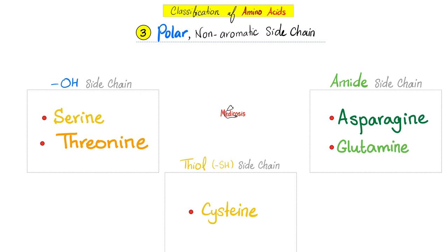Third group: amino acids that are polar with non-aromatic side chains. Serine, threonine — they have an OH. And then cysteine, which has a thiol group. Thiol is SH. What are the two sulfur-containing proteogenic amino acids? Cysteine and methionine. Amide side chains: asparagine, glutamine.